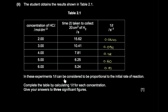In these experiments, 1/T is considered proportional to the initial rate of reaction. Complete the table by calculating 1/T for each concentration to three significant figures. Be careful with rounding, as the entire column is worth one mark — any rounding error will lose the mark.